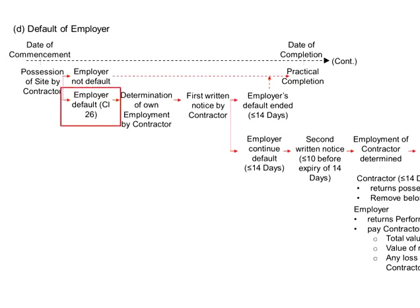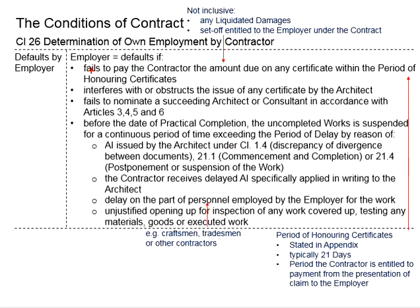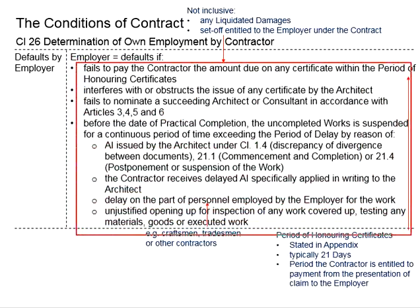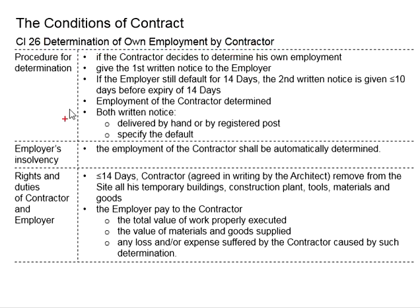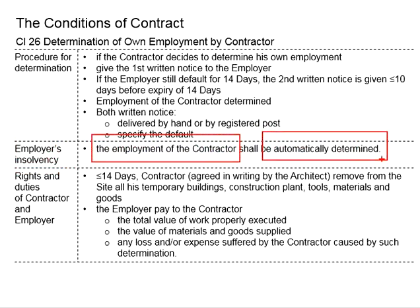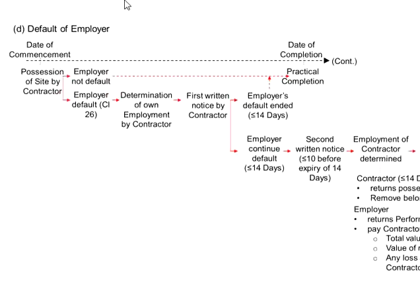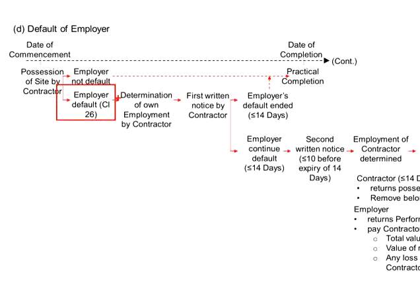In the case that the employer defaults — which can be any of the items listed here — or if the employer files for bankruptcy, then the determination of own employment by the contractor shall be triggered. If the employer files for bankruptcy, the employment of the contractor shall automatically be determined.